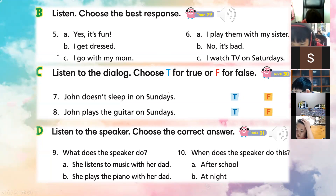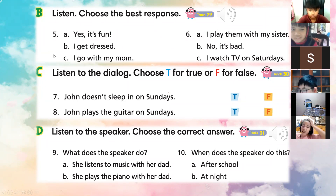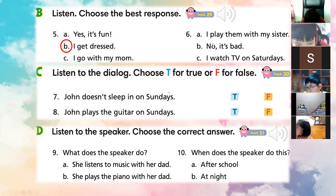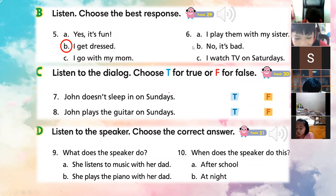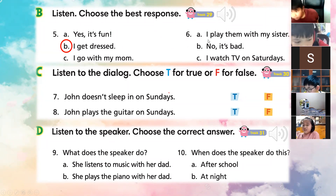Number five: What do you do in the morning? What is the best response — A, B, or C? B. Exactly, that is the correct response. In the morning, get dressed. Now how about number six? What is the best response? A. Exactly — I play them with my sister.